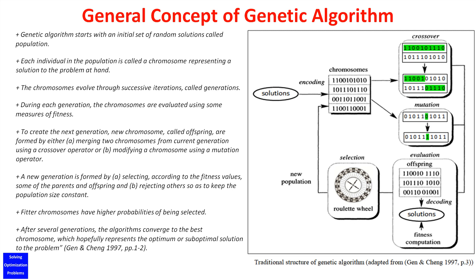Genetic algorithm starts with an initial set of random solutions, called population. Each individual in the population is called a chromosome, representing a solution to the problem at hand. The chromosomes evolve through successive iterations, called generations.